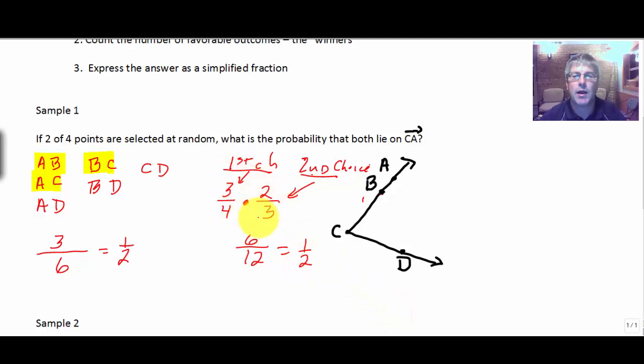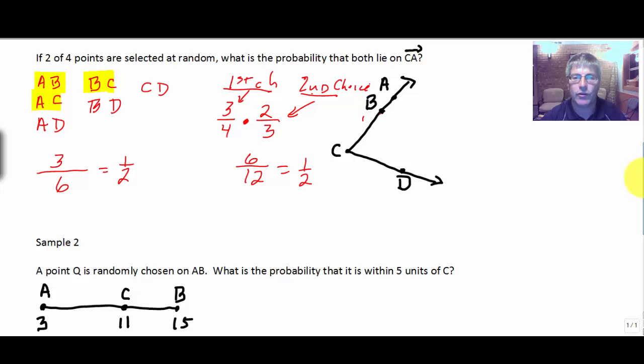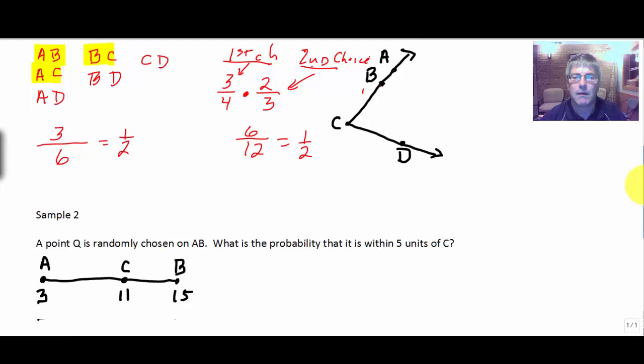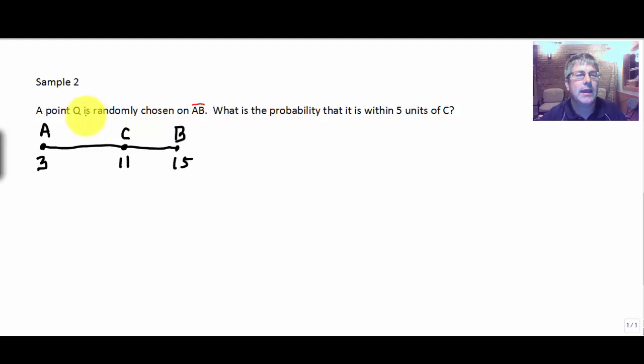So for this type of problem, we can do that algebraically, and you'll see a couple problems like that in your classwork. Not all of them are that way though, so you have to be careful. Some of them you may just have to write out all the possibilities. Let's take a look at a different kind of sample problem. Now this one, we can't write out all the possibilities. So the question is, a point Q is randomly chosen on segment A, B.